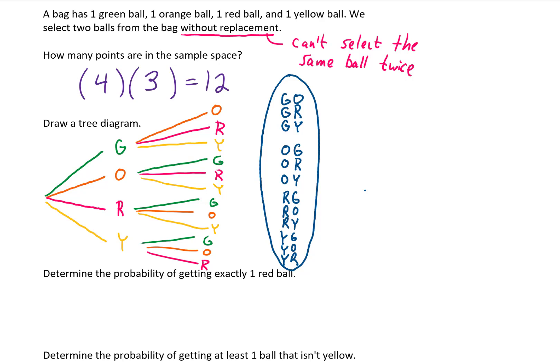Now that we have the sample space written out, we can calculate some probabilities. First, let's determine the probability of getting exactly one red ball. Looking at the sample space, we count how many points have exactly one red ball. That turns out to be six possible points out of 12 possible outcomes, which reduces to one half, or 0.5 — in other words, a 50-50 chance.